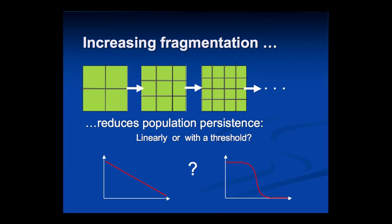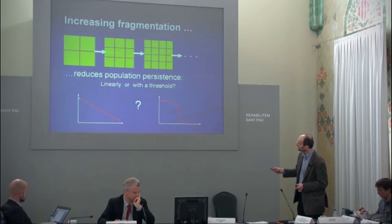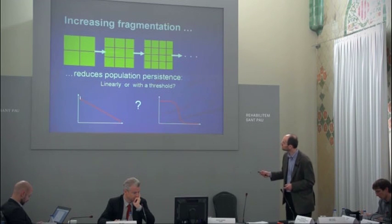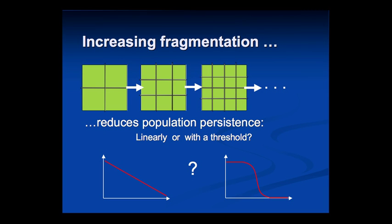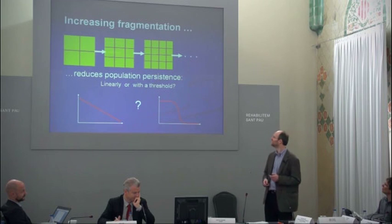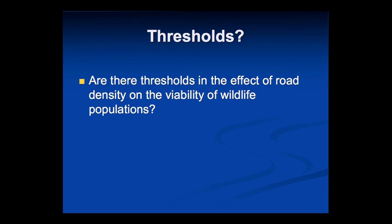What happens if we put more and more barriers into the landscape? If we plot road density on the x-axis and population viability on the other axis, would we expect a linear relationship going down, or a threshold? That was one of the questions I looked at during my postdoc, using a computer simulation model to study whether there are thresholds in the effect of road density on the viability of wildlife populations.